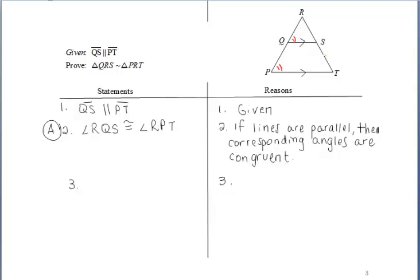But then since the smaller triangle, RQS, is physically inside of the larger triangle, RPT, we can use reflexive property on now that yellow angle, R, because those two triangles share that angle.